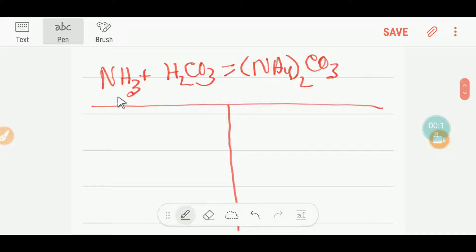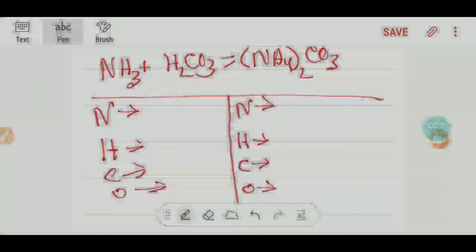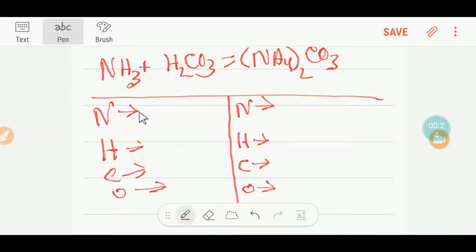On the left-hand side, we have one nitrogen. Here we have three hydrogen, here we have two hydrogen, so totally we're getting five hydrogen.